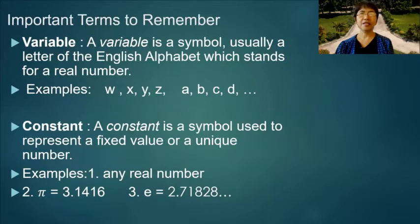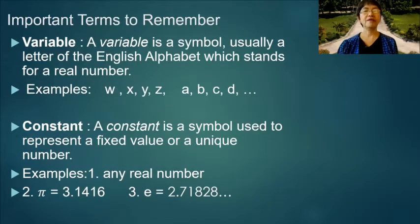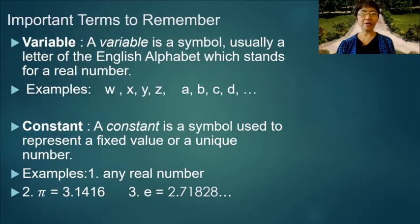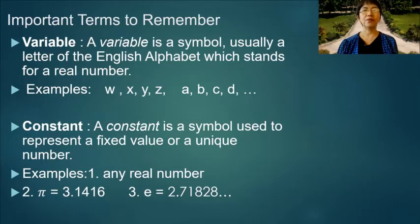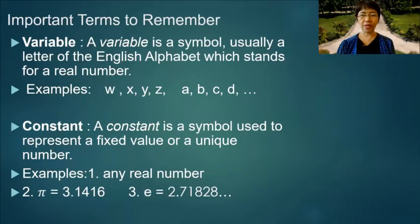Here are some important terms to remember. Variable: a variable is a symbol, usually a letter of the English alphabet, which stands for a real number. Examples: w, x, y, z, a, b, c, d.